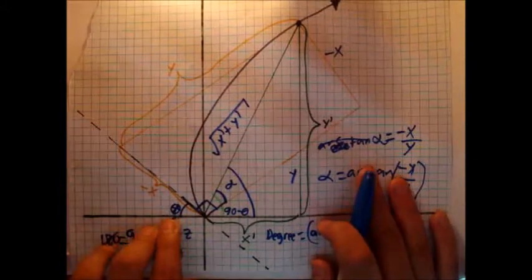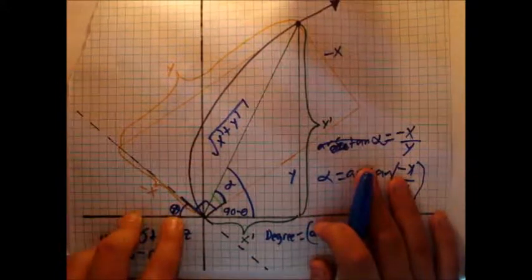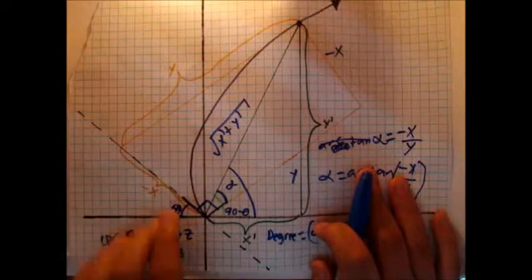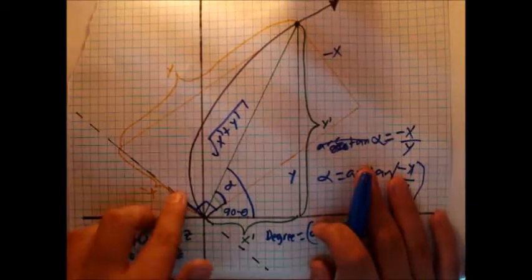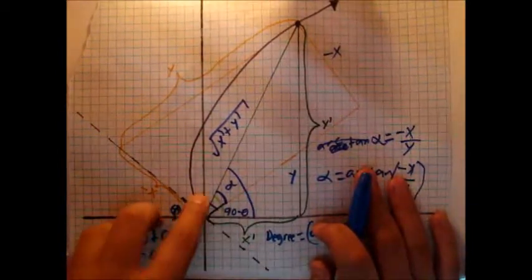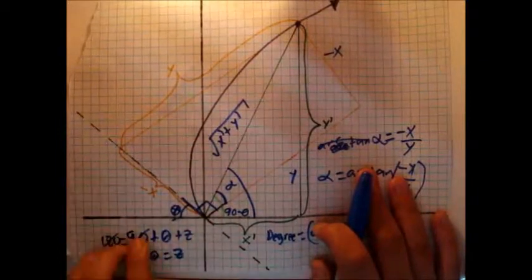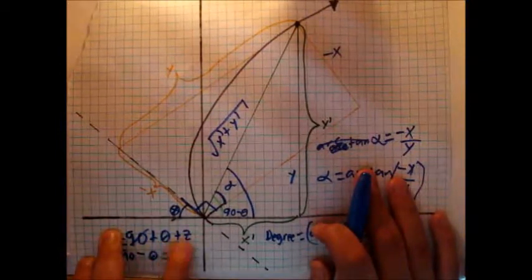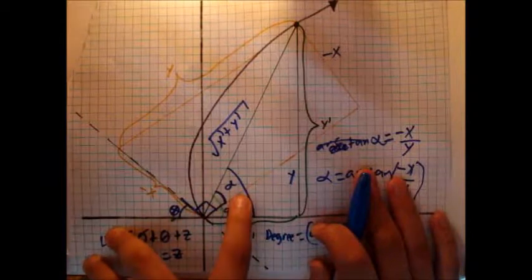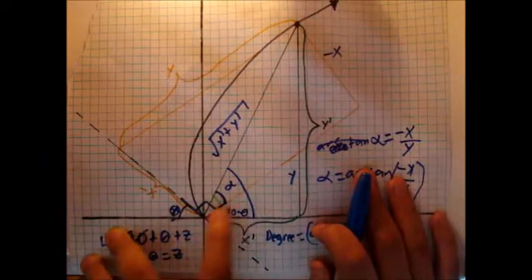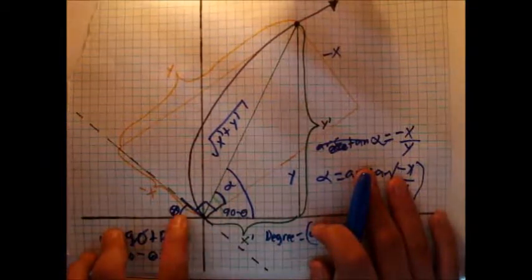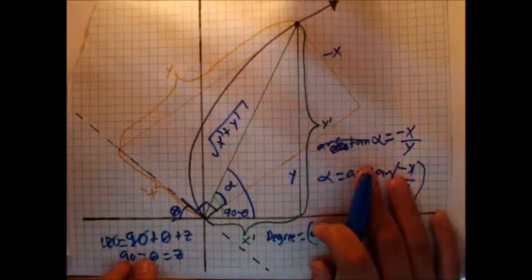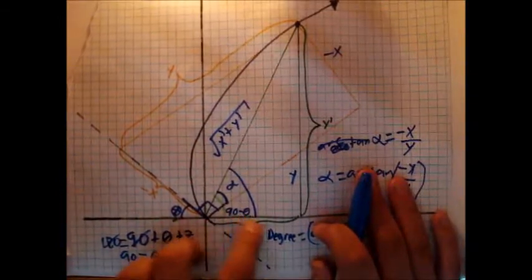Before we actually find the degree, let's consider theta as the amount of degrees we want to shift the function. The orange is a rectangle, so this must be 90 degrees — giving us 90 plus theta. Let's call this remaining side z. All this must add up to 180 because it's a line, and when you isolate z, z equals 90 minus theta. So this side must be 90 minus theta.